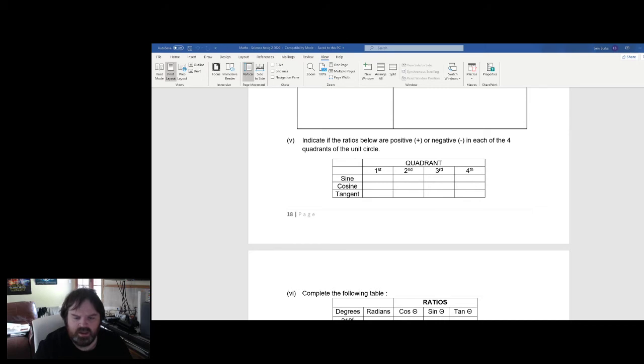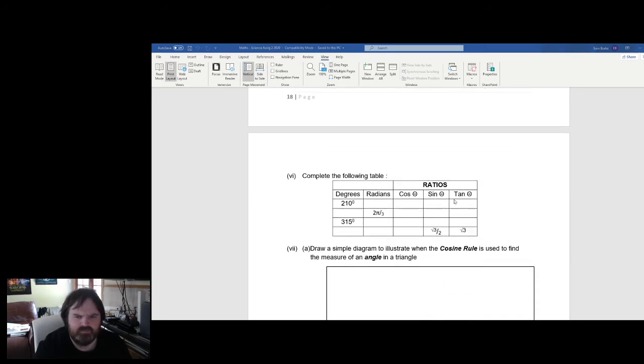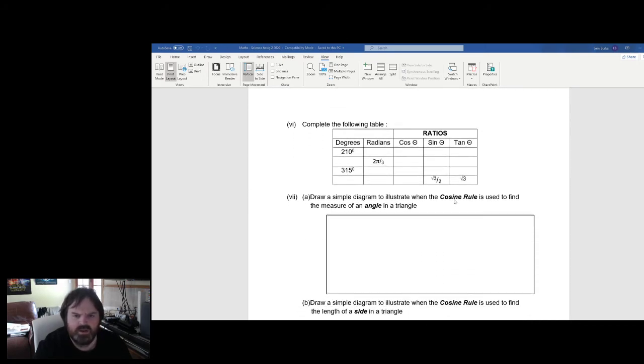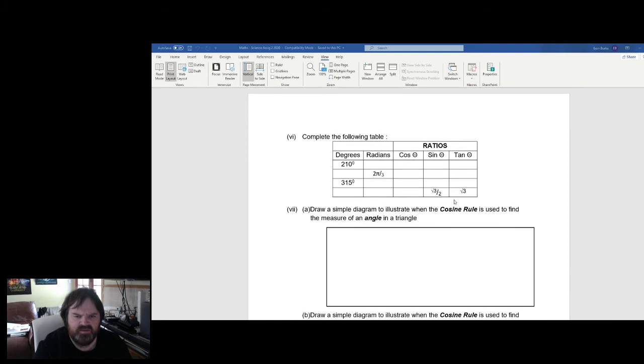The table here, next up, requires you to effectively figure out more or less the differences here. Basically, this is 210 degrees. What's that in radians? What's that in cos, sine, and tan? You'll need to use a calculator for this or a log table.